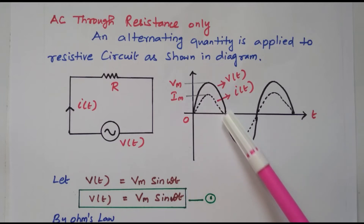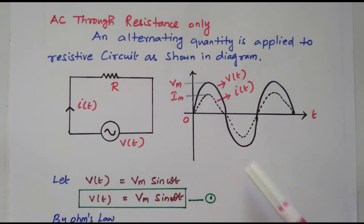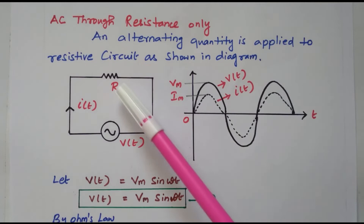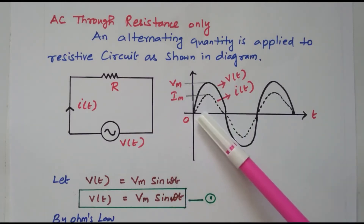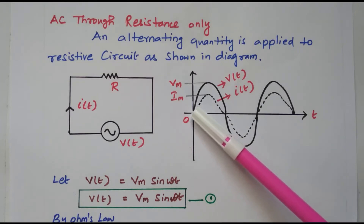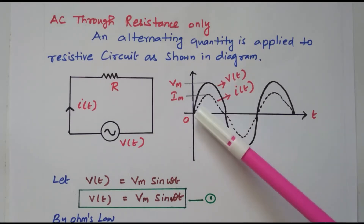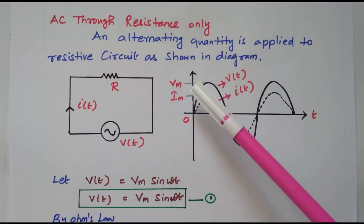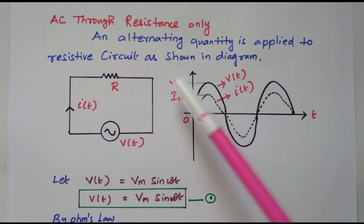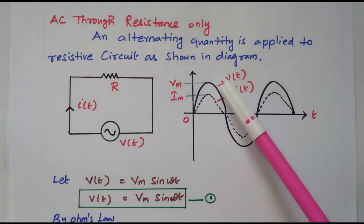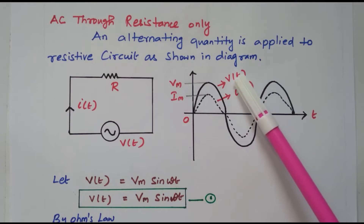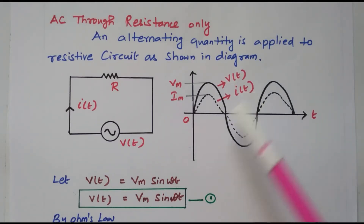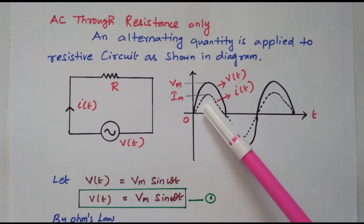The applied voltage V(t) is a sine wave with positive and negative cycles, amplitude Vm. Now looking at the current waveform: in the case of a resistor, both current and voltage are in phase. In phase means both current and voltage start at 0 degrees — there is no leading or lagging. The amplitude of voltage is Vm and the amplitude of current is Im. This is the V(t) waveform and the I(t) waveform of the current.